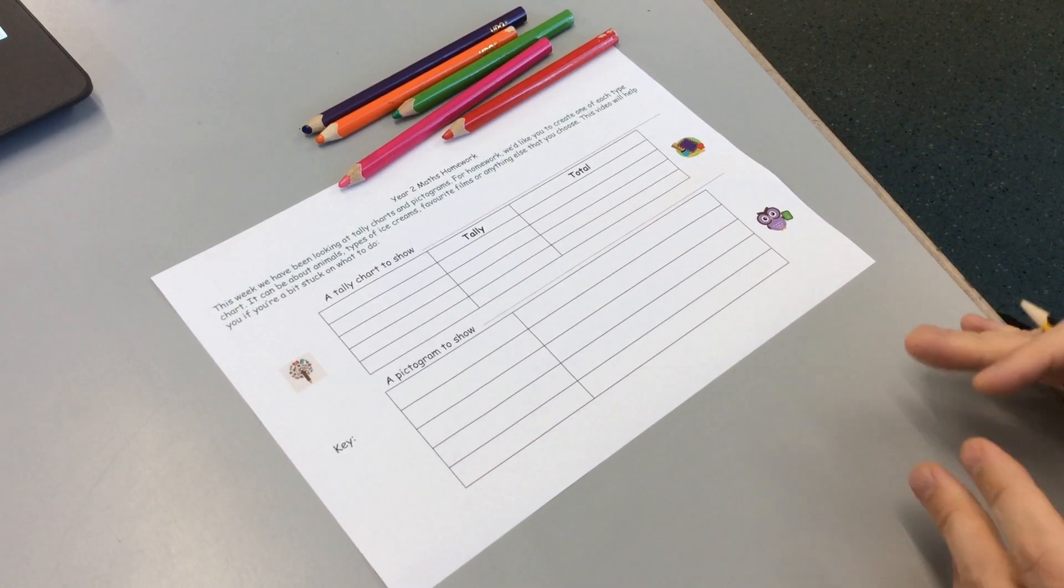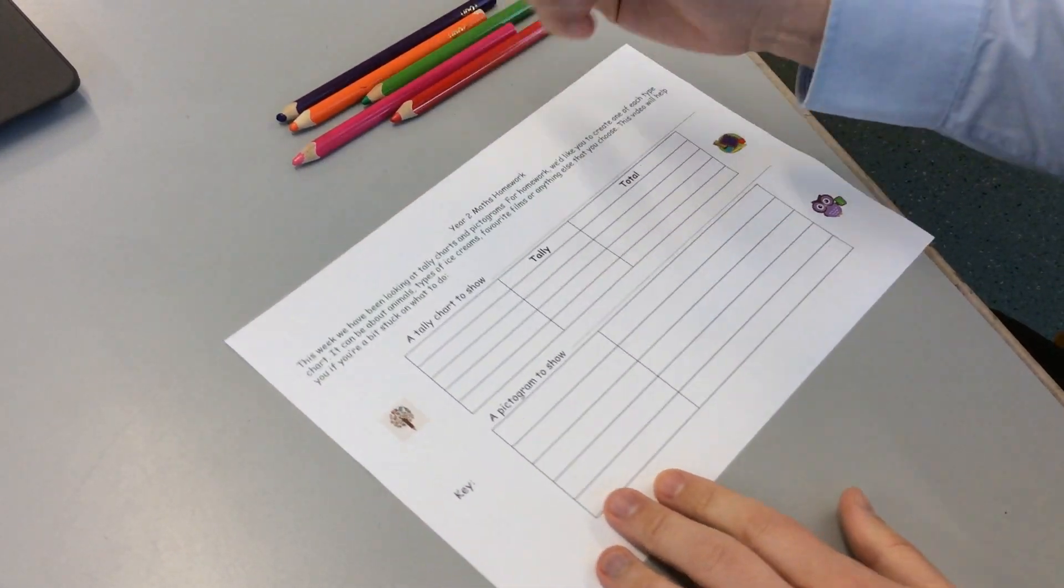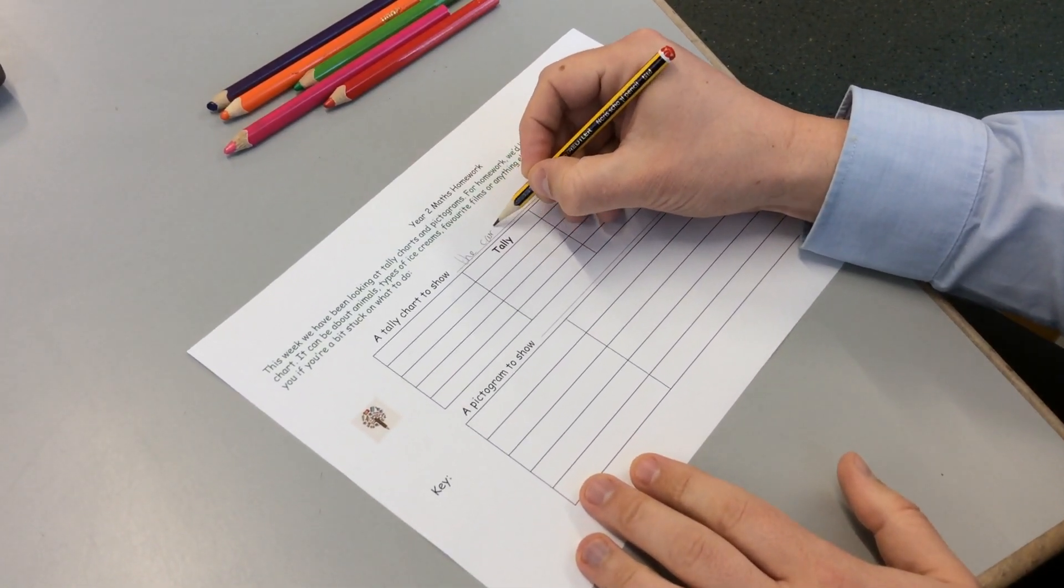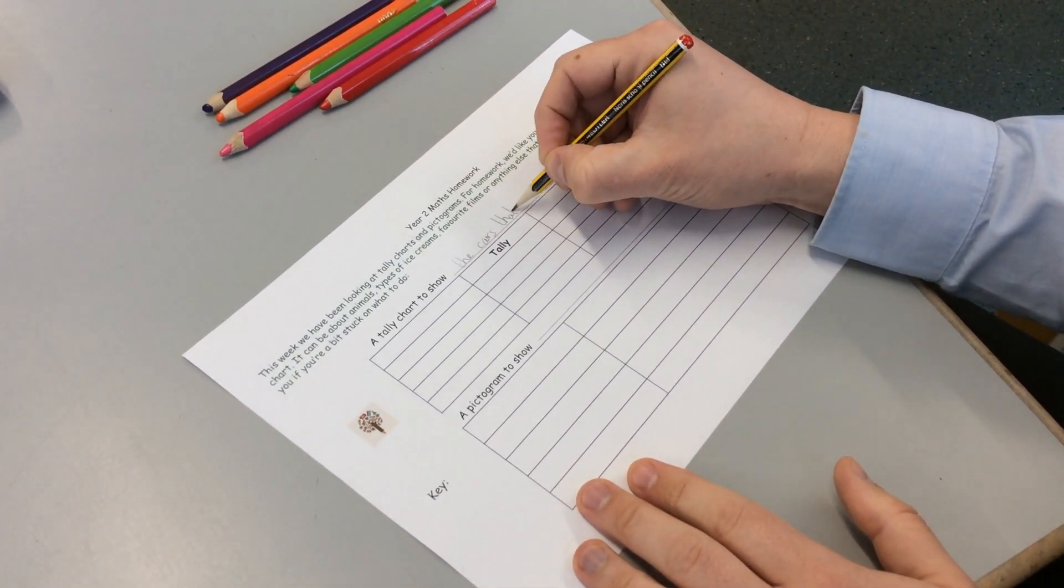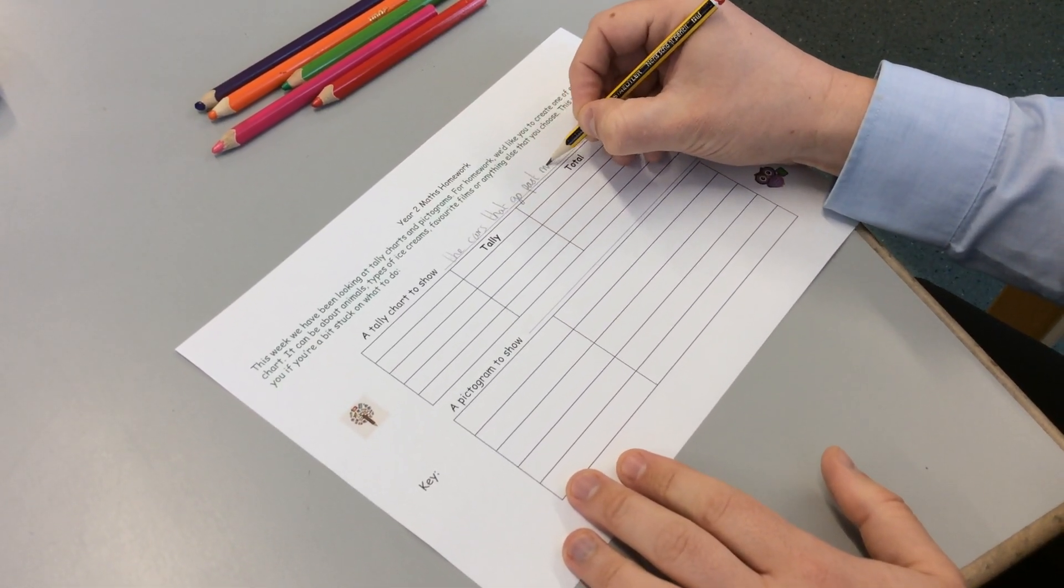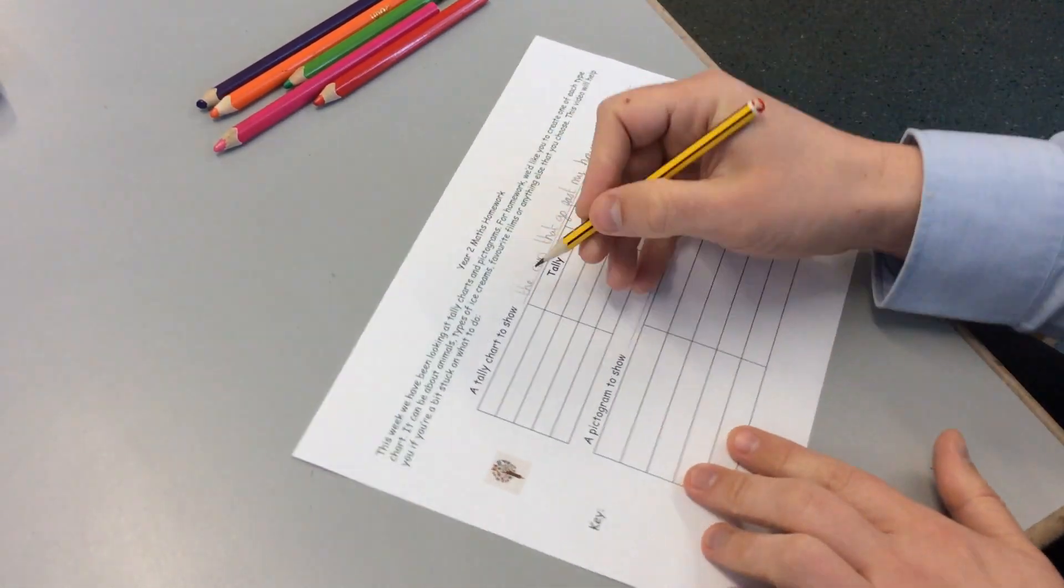Or you can actually do it just by looking at something. So you could look outside the window and see how many different colored cars go past. In fact, that's the one I'm going to do. So I'm going to do a tally chart to show the cars that go past my house. So what I do is I sit there and I watch for 10 minutes. First of all,